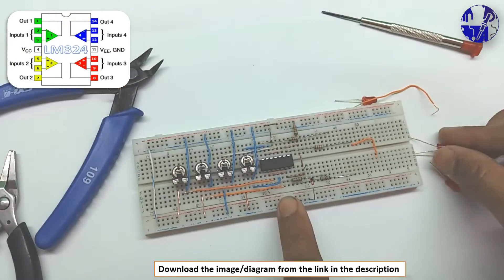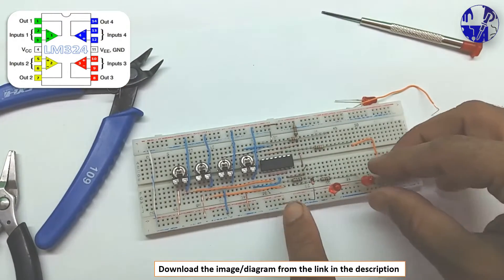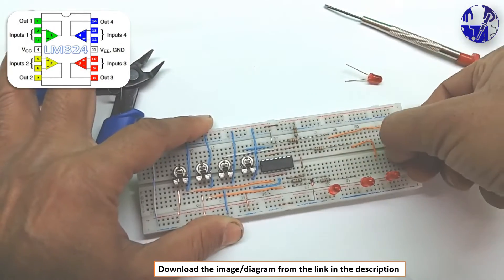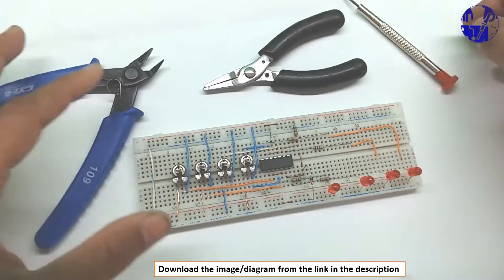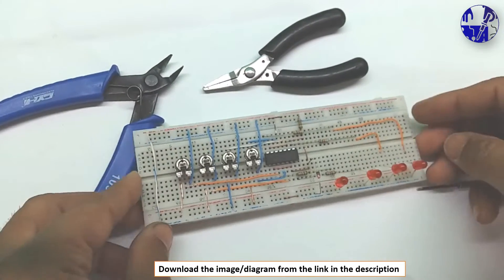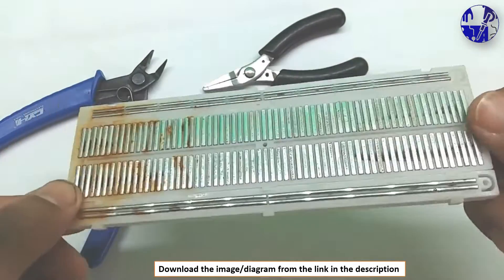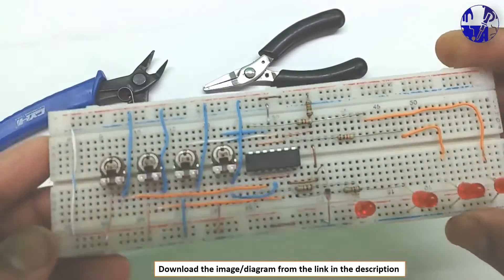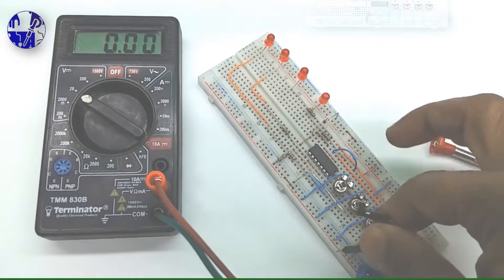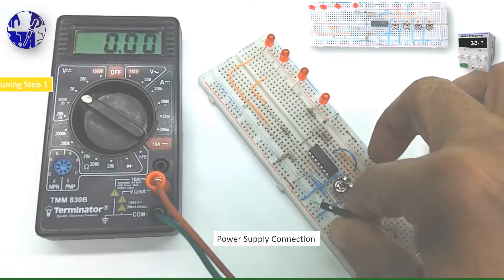The LM324, a quad-channel operational amplifier, serves as an excellent choice for battery voltage level indicators, ensuring precise and reliable monitoring. Constructing projects like these is ideal for educational purposes, fostering valuable learning experiences.